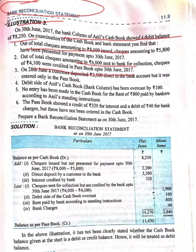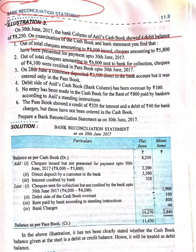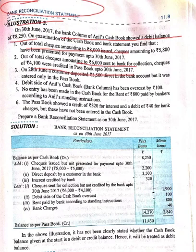On 28th June, a customer deposited 3,500 directly in the bank account. It means 3,500 is being credited in the bank, so we will add this. The debit side of Anil's cash book has been overcast by 100 rupees — we thought 100 rupees was in excess in the bank, but in reality the bank account was not credited by this 100 rupees, so we will also deduct that.